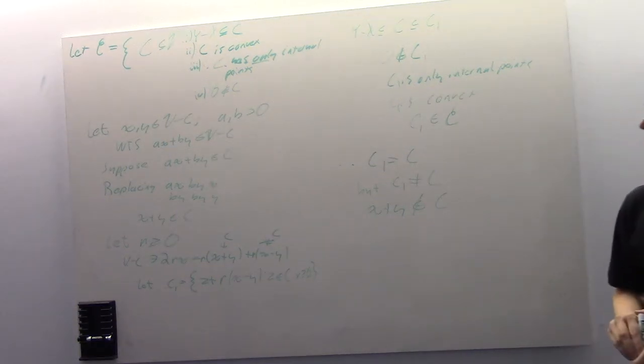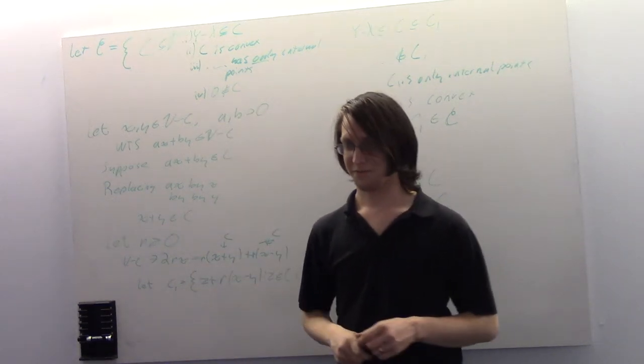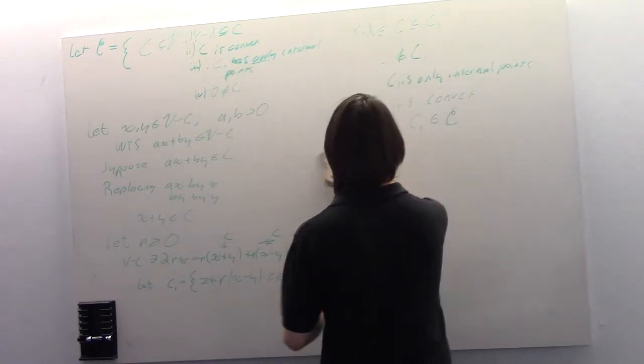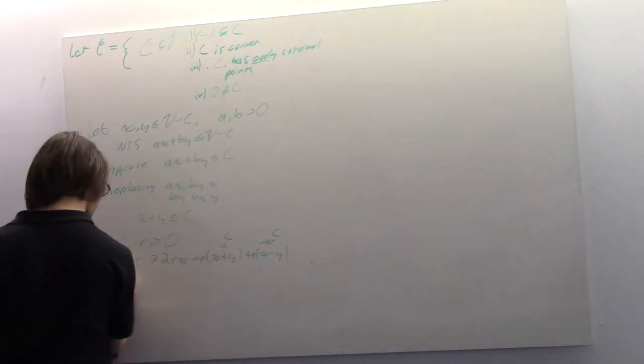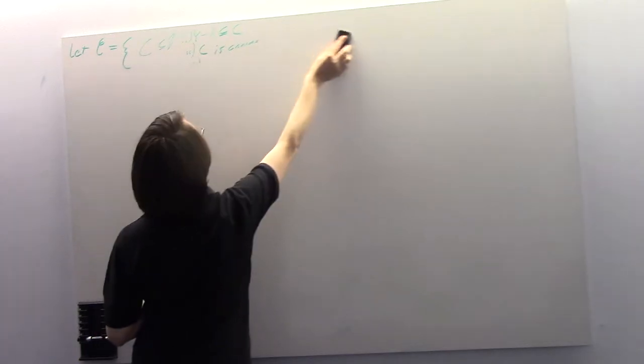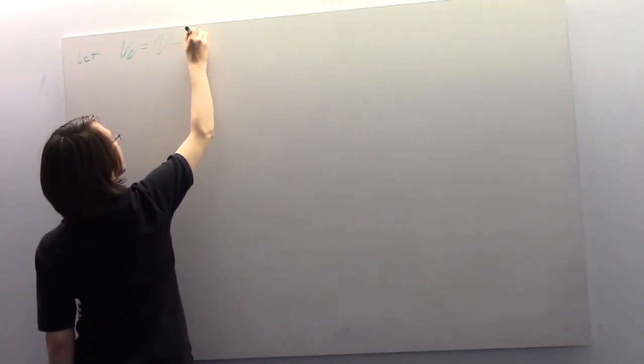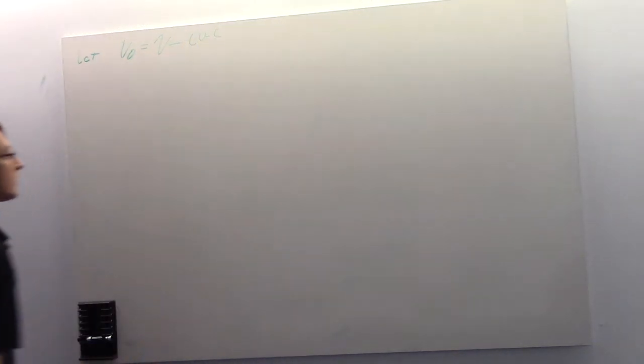We've built up our C enough to finally find our null space. C1 for C0, C1: this is usually going to look like the null space of a linear functional. V-naught equals V minus C union minus C. Let's take a look at C union minus C, specifically C intersect minus C.